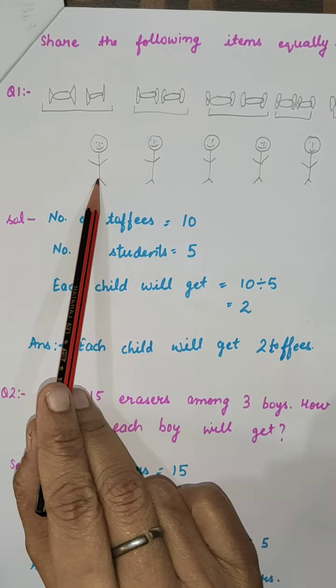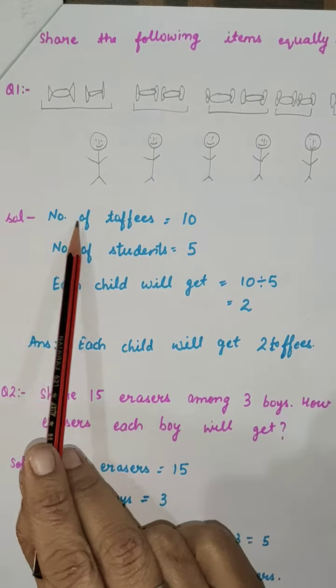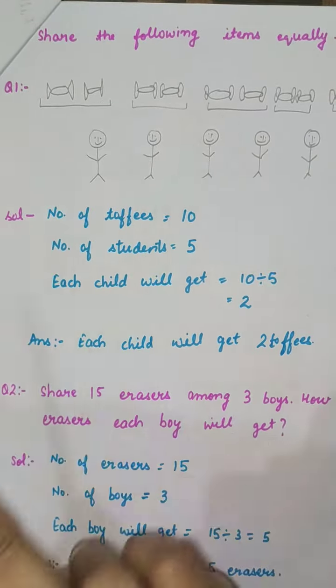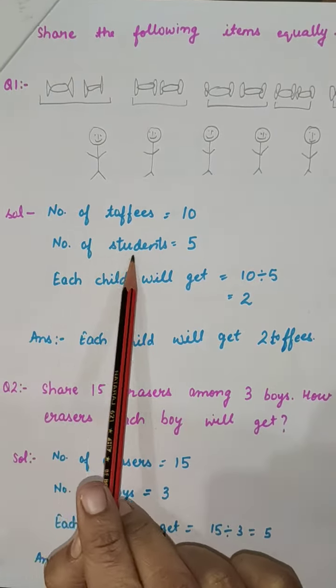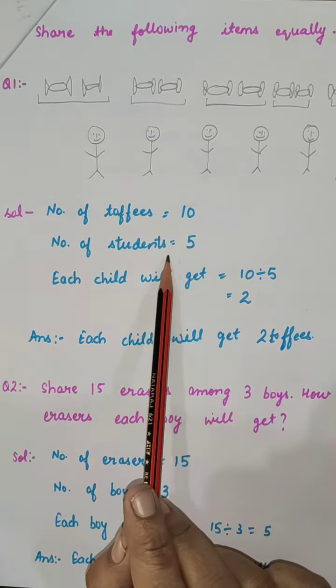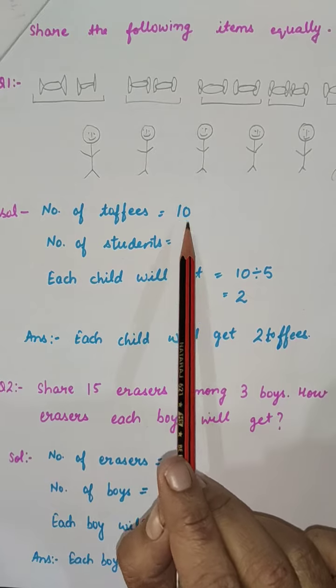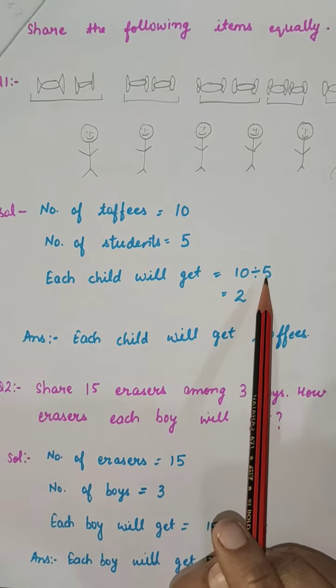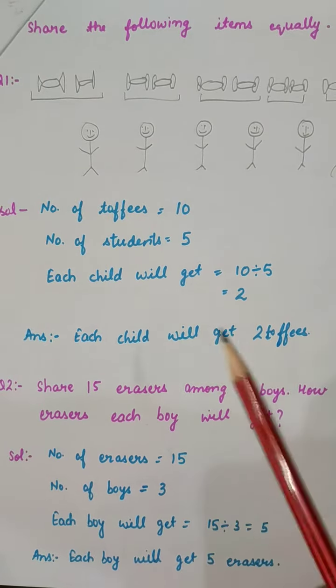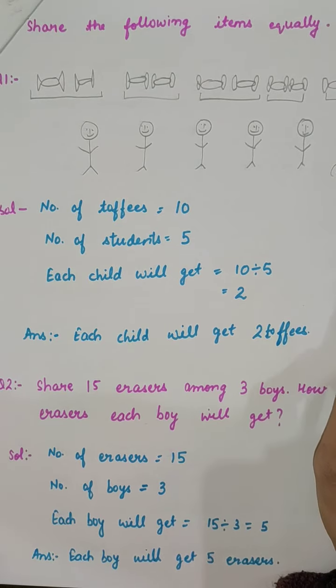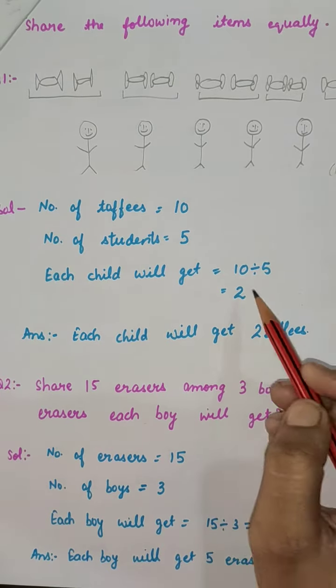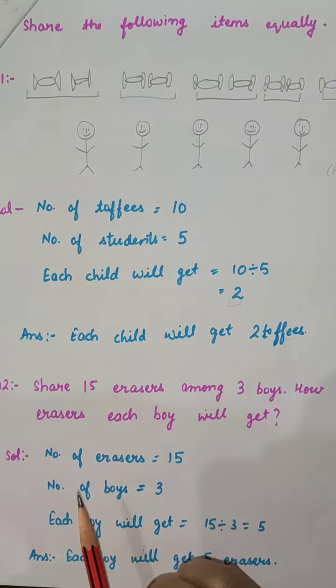How can you do that? You can divide them. Number of toffees is ten, so I have written ten. Number of students is five, so I have written five. Each child will get - now you will divide ten divided by five. Five twos are ten, so we will get the answer two.